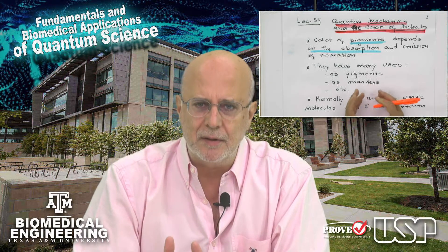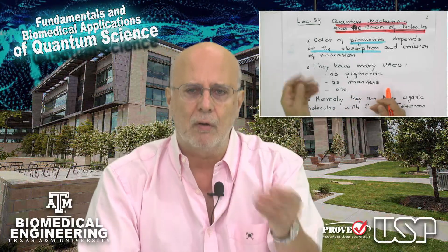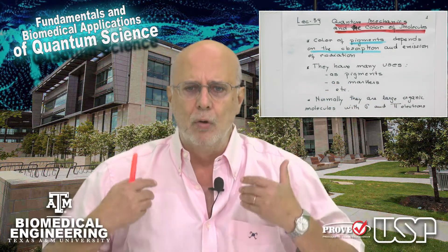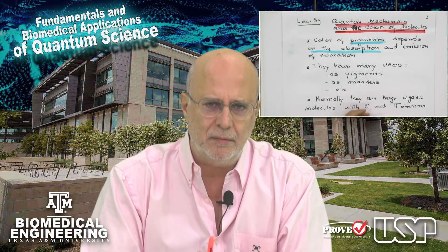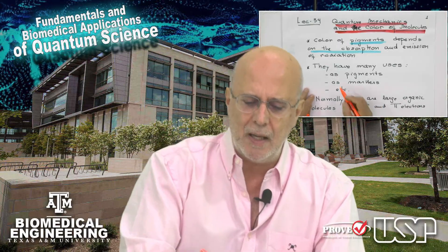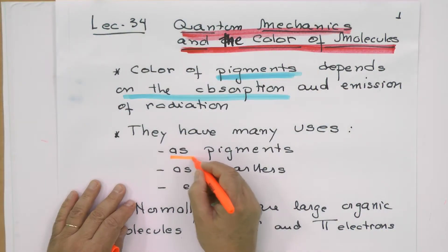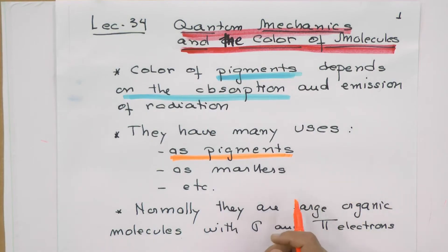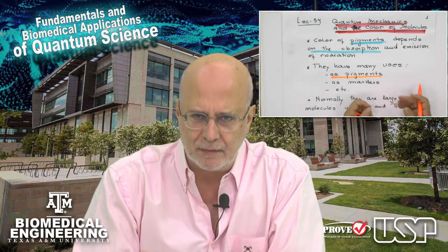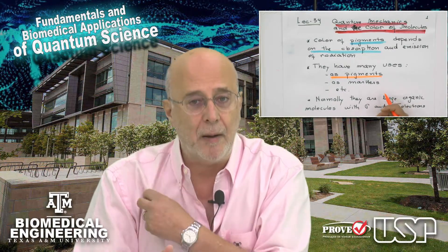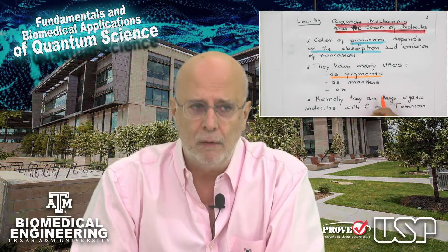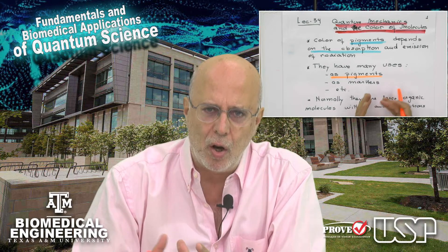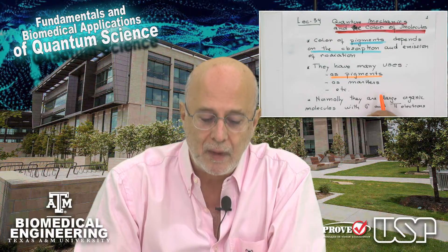Pigments, or the molecules that give us colors, are found in many places. The clothes we use have so many colors because we use different molecules. There are many applications of organic molecules as pigments — in tissue, fabric, painting walls, and many other things. We normally use molecules that have specific colors.